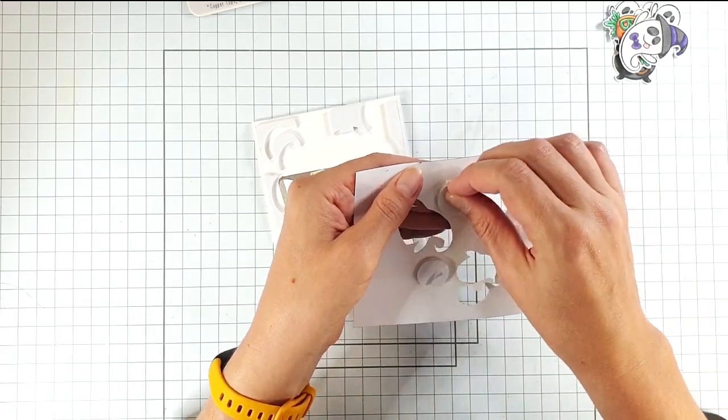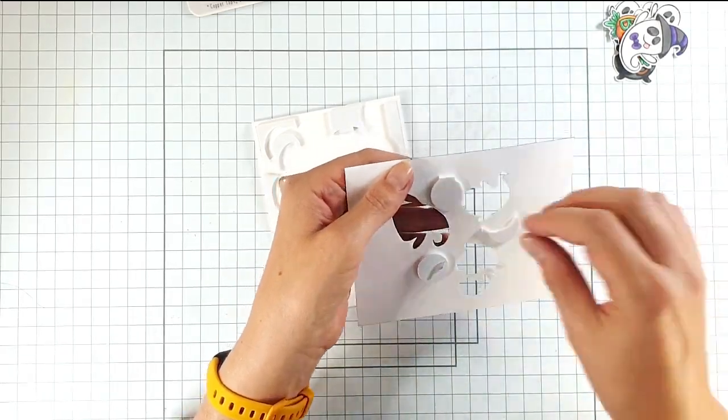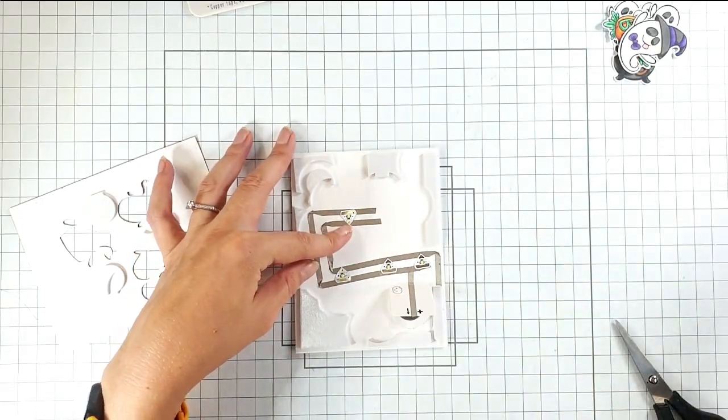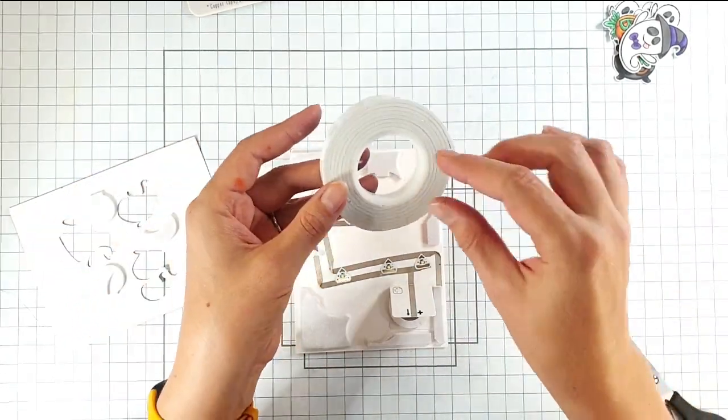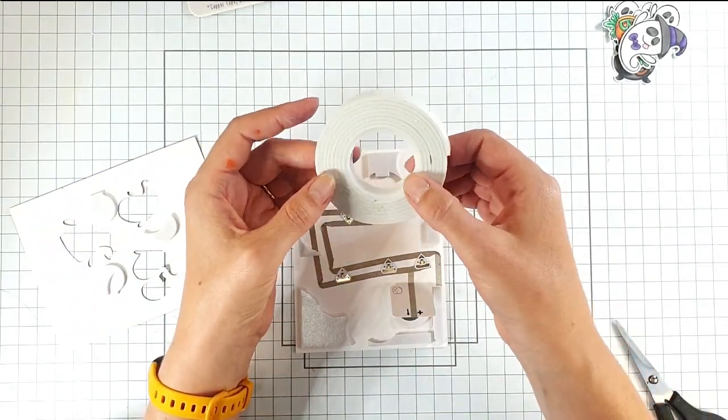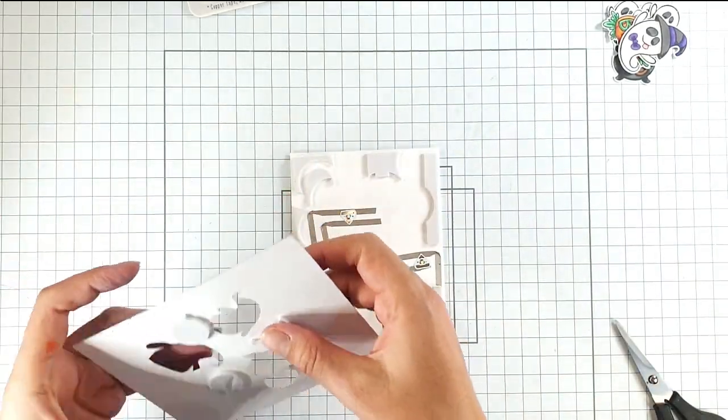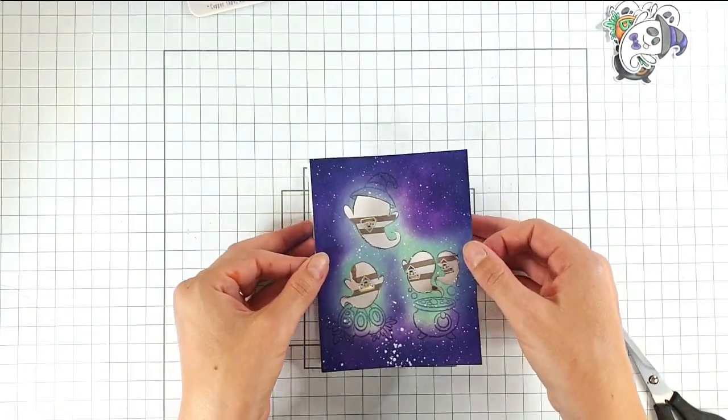So then I can take the backing off my foam, and because I use the waste on my battery holders, I always seem to have quite a bit of foam tape left over that I can use on different projects. Then I'm going to pop this on here.